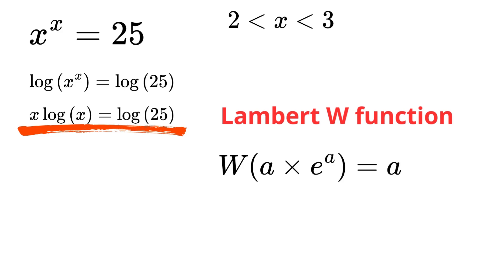For example, if we have 3 times e raised to the power of 3, applying the Lambert W function gives us back 3. That's the magic of this function.